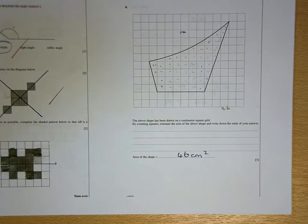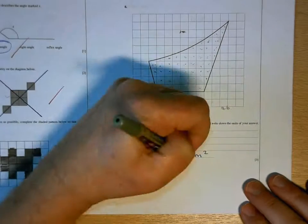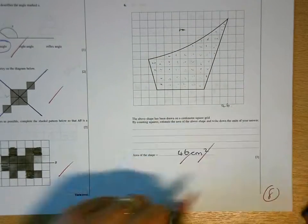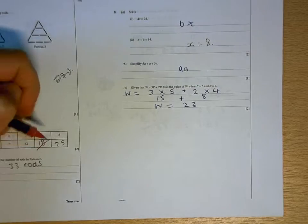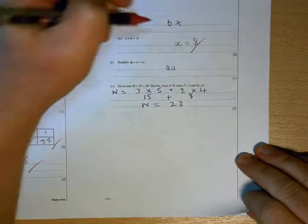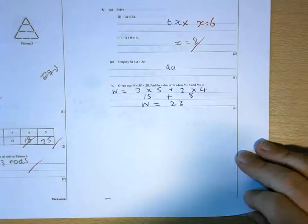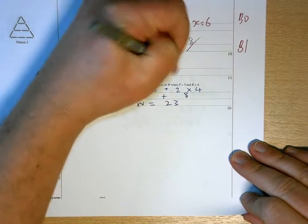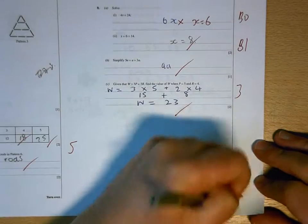Right, that is correct, well done. 46 is good, and you've got the units mark as well, so you've got full marks on that page. That's right, that's right, and so are they. X equals 8 is right, that's wrong, it's not 6X, it's X equals 6. 9A is right, and so is that, 9 for the page.